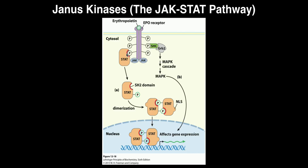In any case, STAT binds to the JAK and gets phosphorylated, because the JAK is a kinase so it can phosphorylate STAT. Whenever STAT becomes phosphorylated, it dimerizes — and it dimerizes in a cool way. The SH2 domain is good at binding phosphates, so the SH2 domain of one STAT binds the phosphate of the other STAT. The phosphate of the STAT on the left is bound by the SH2 domain of the STAT on the right, and vice versa.